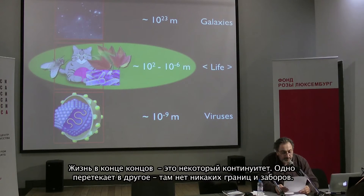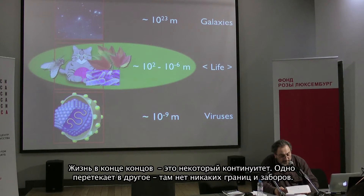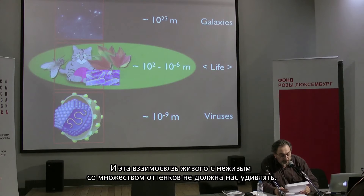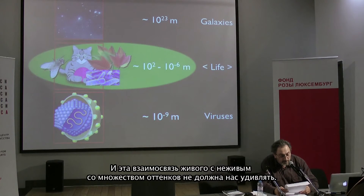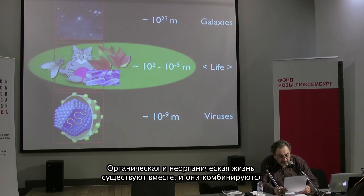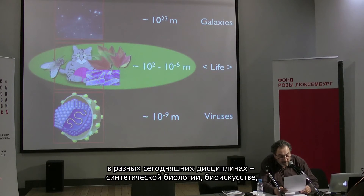Life appears as a sort of continuum without fences between organic and inorganic. This contiguity between what is alive and what is not should not be surprising. According to abiogenesis and biopoiesis, life arose from non-living matter about 4 billion years ago. Organic and inorganic are contiguous, osmotic universes. And today, both can be combined in disciplines such as nanotechnology, robotics and synthetic biology.